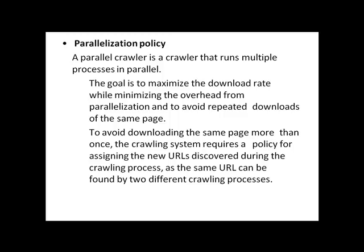Parallelization Policy: A parallel crawler is a crawler that runs multiple processors in parallel. The goal is to maximize the download rate while minimizing overhead from parallelization and avoiding repeated downloads of the same page. To avoid downloading the same page more than once, the crawling system requires a policy for assigning new URLs discovered during the crawling process, as the same URL can be found by two different crawling processors.